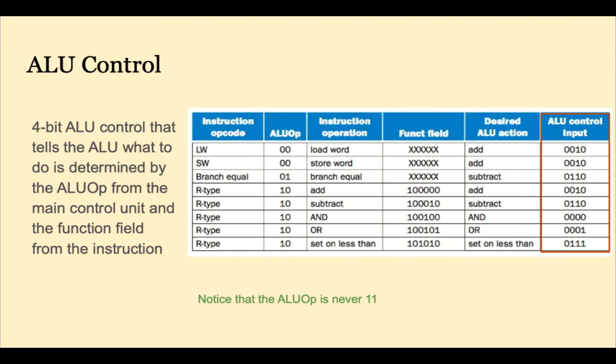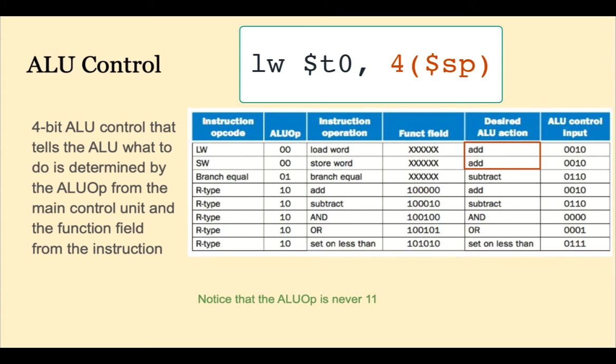The four bit ALU control signal in this reduced instruction set indicates one of five actions. Add for load word or store word since the ALU adds the immediate field to the RS register for based index addressing mode.